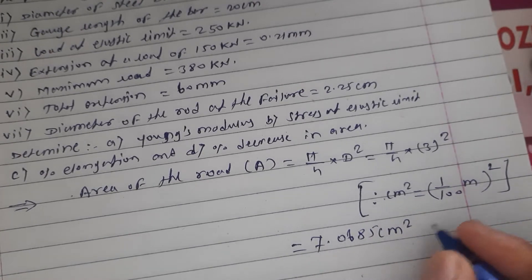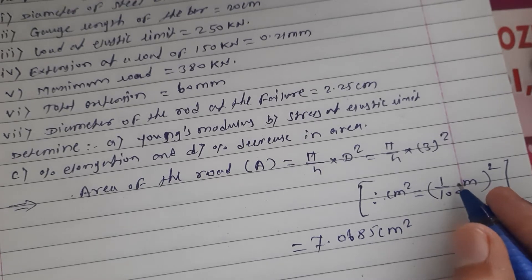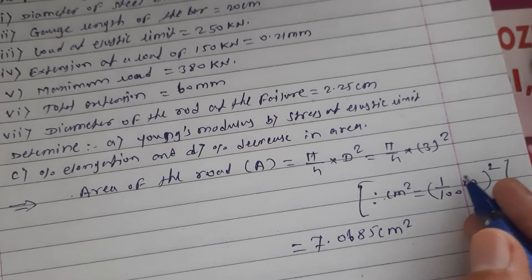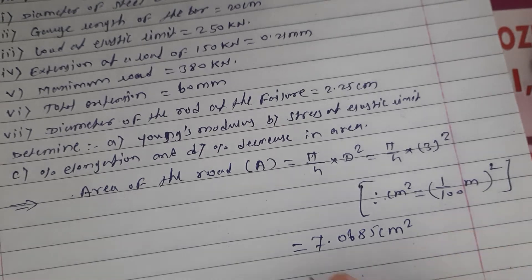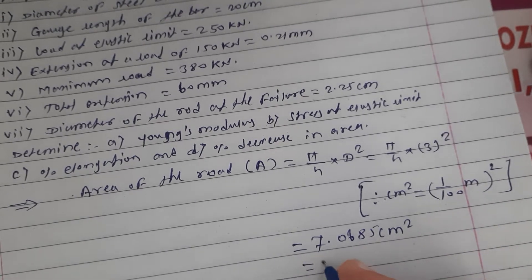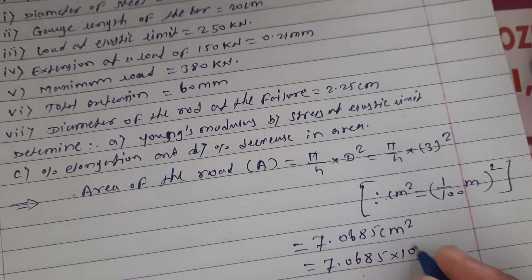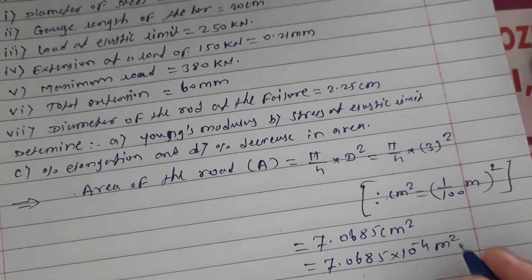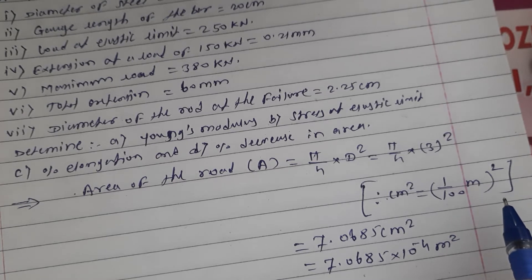Converting into meter square: we have 10 raised to 2 in the numerator, giving 10 raised to minus 2 plus 10 raised to minus 2, which gives 10 raised to minus 4. So the area is 7.0685 into 10 raised to minus 4 meter square. When converting centimeter to meter, divide by 100, divide by 100 for the given value.